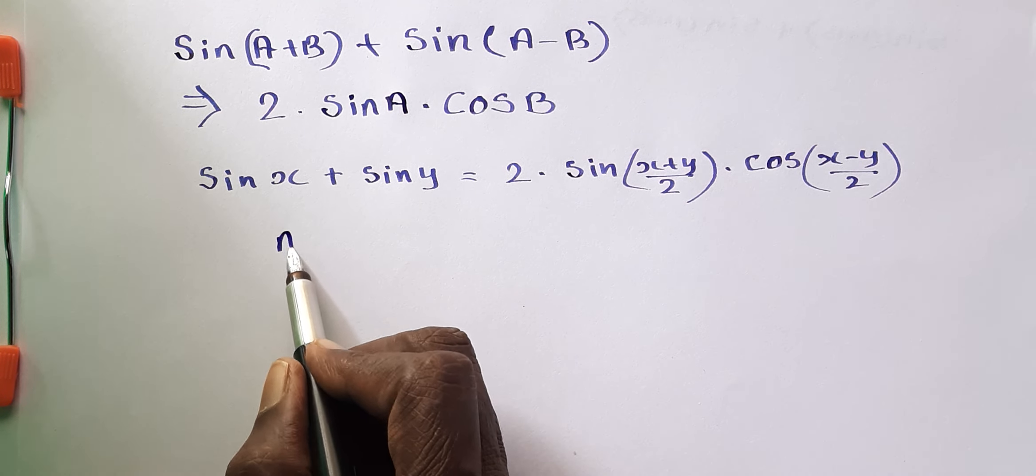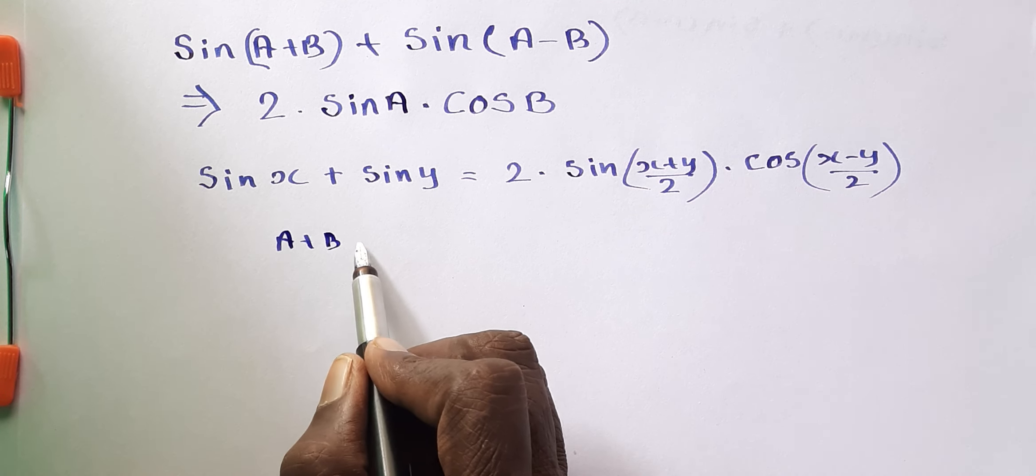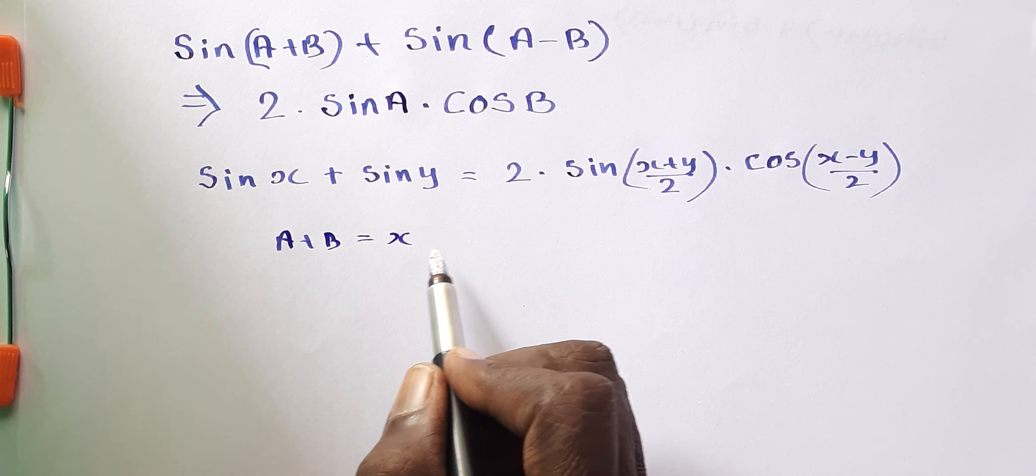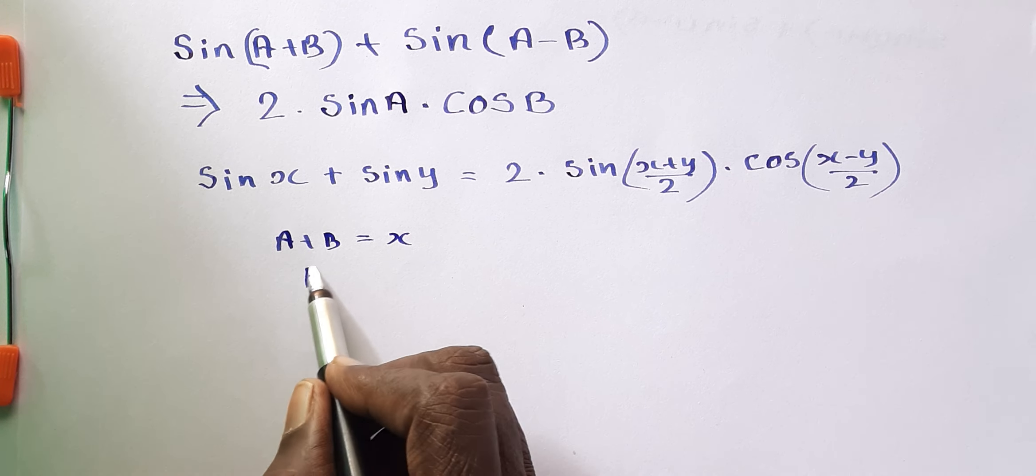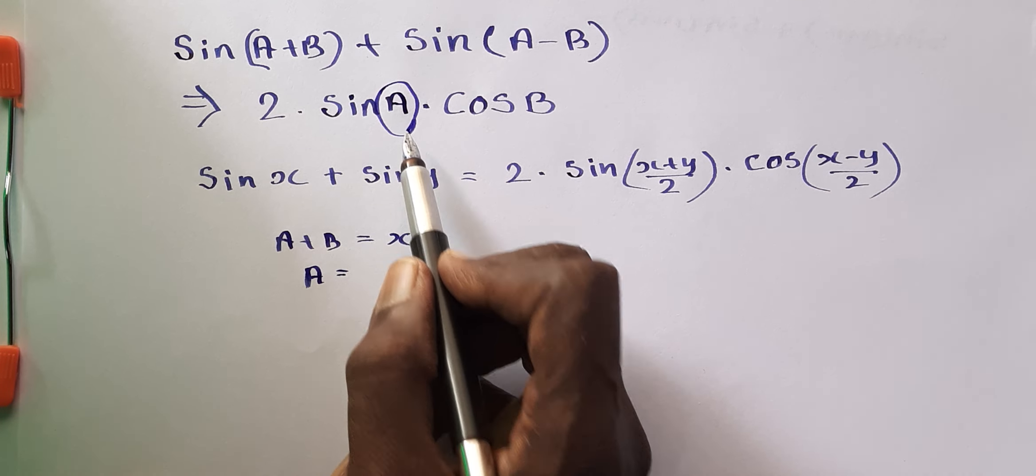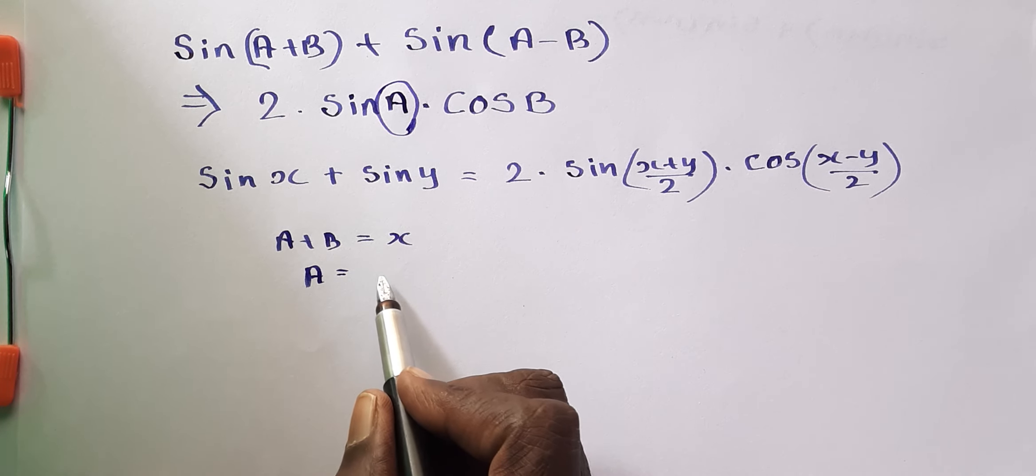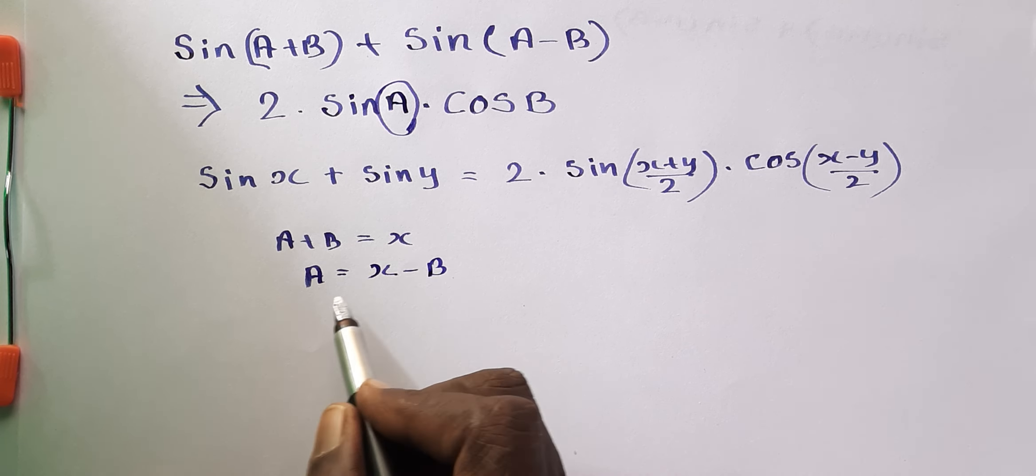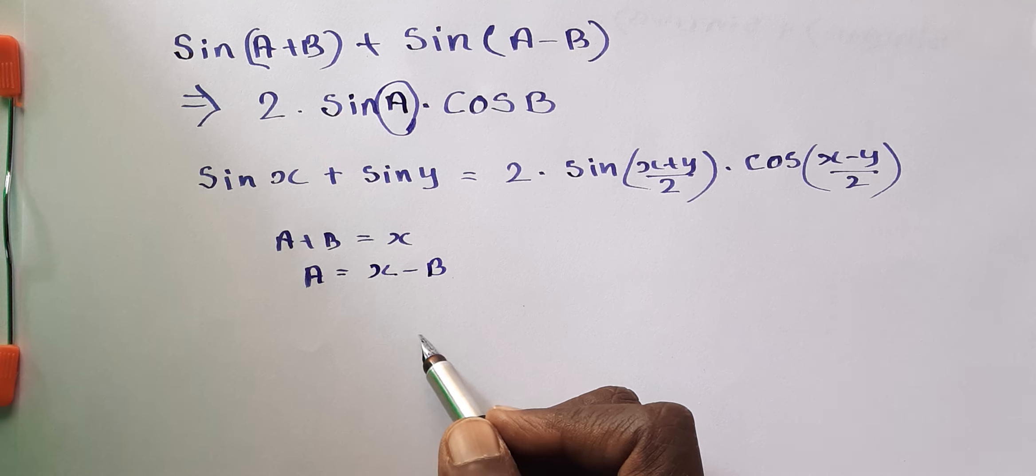A plus B is equal to X. OK, A is equal to, we want to find A, so A is equal to X minus B, substitute as X minus B.